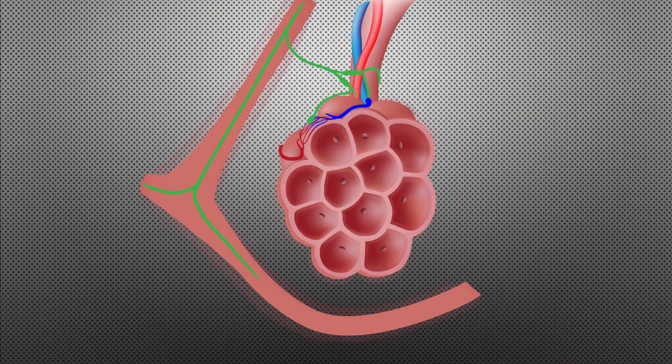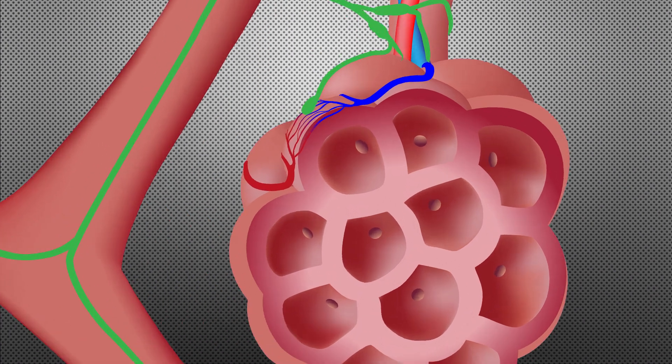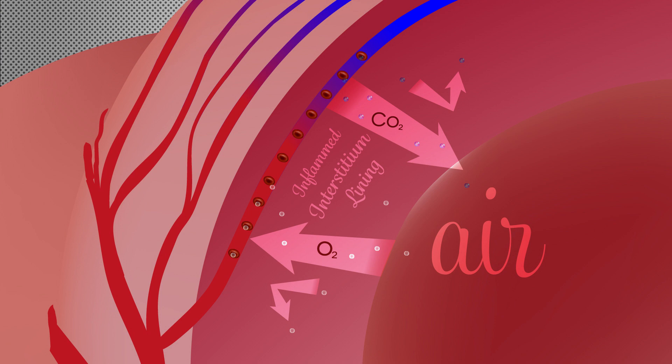The lymphatic system travels around that area, and the supporting structures of the lung travel there as well. When you have interstitial lung disease, you have inflammation in those areas. ILD means there's inflammation around that balloon, around that pulmonary artery, around that bronchiole, and around that secondary pulmonary lobule. When you have that inflammation, it is really difficult for oxygen to get across that membrane and into your bloodstream.